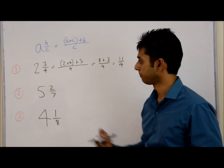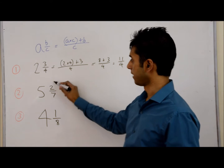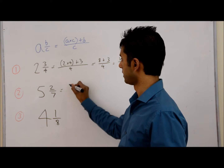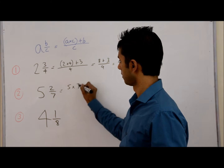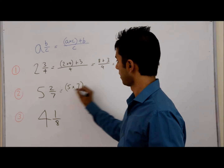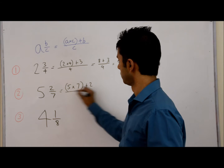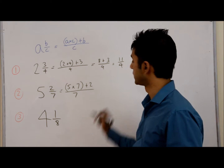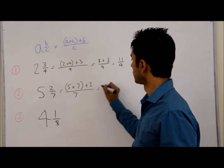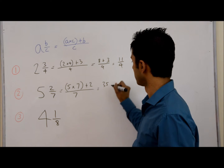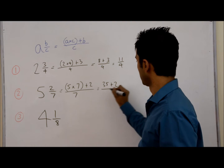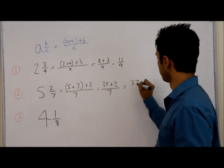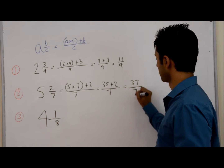Let's try another one. So 5 and 2 sevenths — this time we do 5 times 7, then add the numerator 2, and the whole fraction is over 7. So 5 times 7 is 35, plus 2 over 7, which makes that 37 over 7.